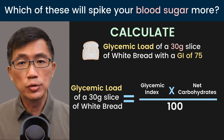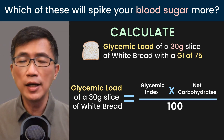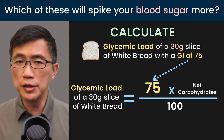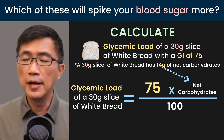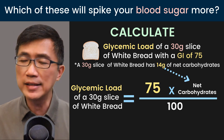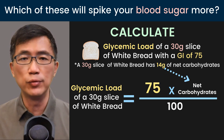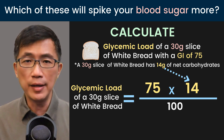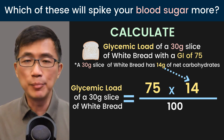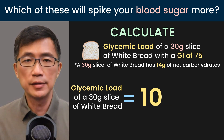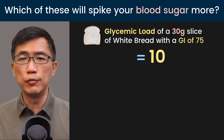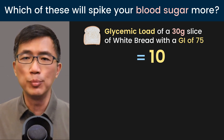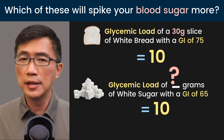Let's calculate the glycemic load of a 30-gram slice of white bread, which has a GI of 75. Using the formula — GI of 75 multiplied by net carbohydrates of 14 grams, divided by 100 — gives a glycemic load of about 10. So the GL of a 30-gram slice of white bread is approximately 10.